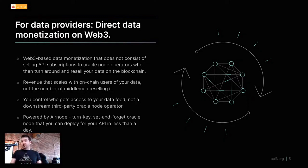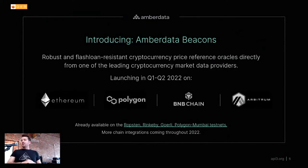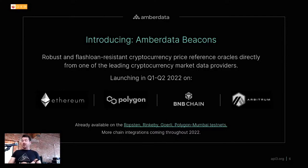Data providers have full control over who gets access to their data since they're running the node themselves, making it very easy to deploy and maintain these feeds. For ETHDenver, we're introducing Amber Data Beacons, launching in Q2 2022. They'll be live initially on Ethereum, Polygon, BNB Chain, and Arbitrum, and are available now on Mumbai testnet and free Ethereum testnets. We'd love to see what people build with beacons in the hackathon.